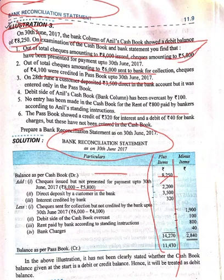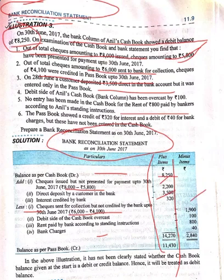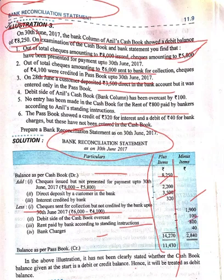Amount directly deposited by a customer in the bank: 3,500. Interest credited by the bank: 320. Now for the less side — cheques sent to bank for collection but not yet collected: the total was 6,000, only 4,100 were credited, so 1,900 are still awaited. Debit side of cash book overcast: 100 rupees. Rent paid by the bank according to standing instructions: 800. Bank charges: 40.